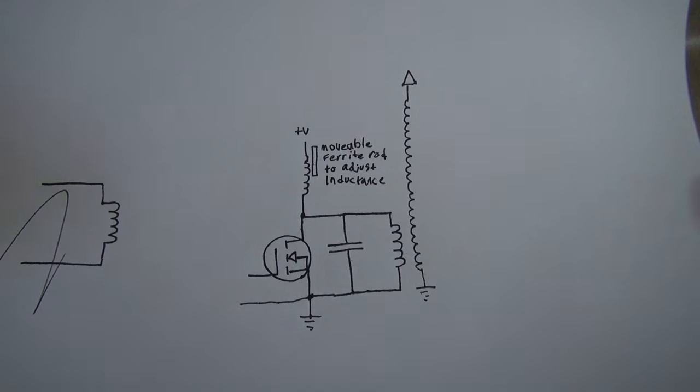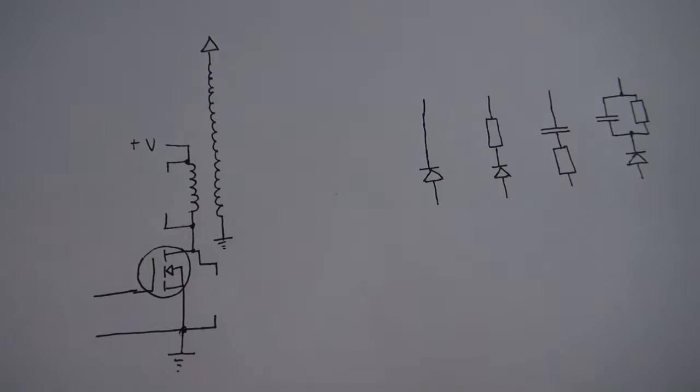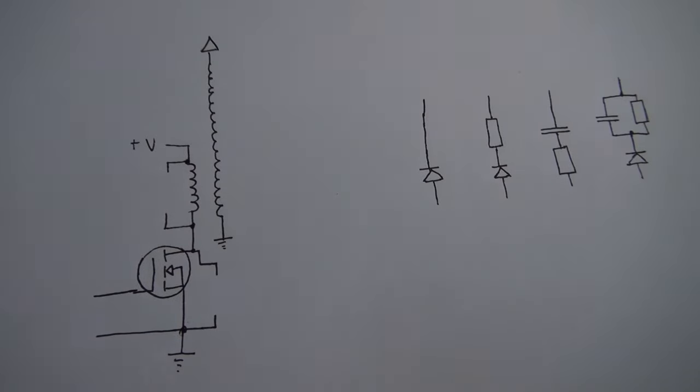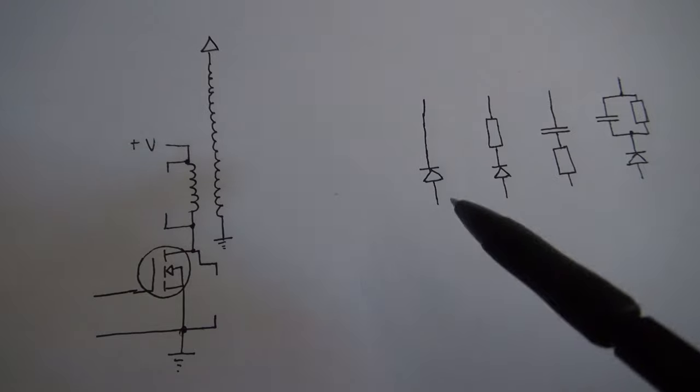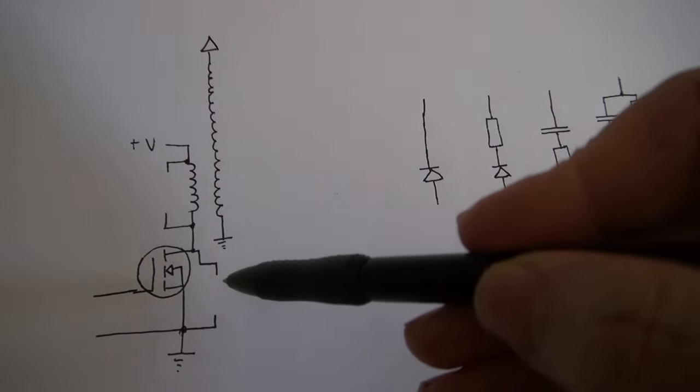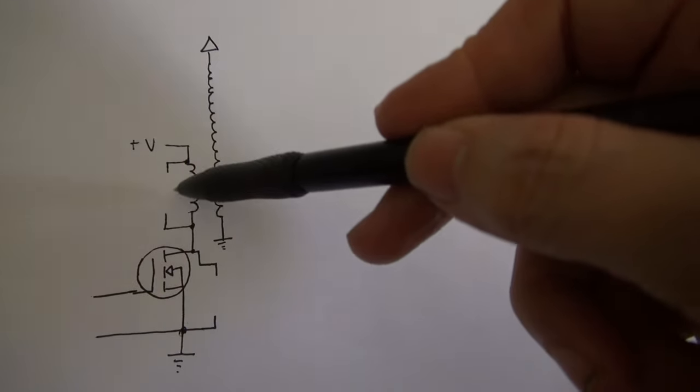And another thing I want to investigate is snubbers. I want to investigate, so this is a typical Tesla coil output stage, I want to investigate which of these is going to work best. And I want to investigate whether it's better to place them across the transistor or across the coil.